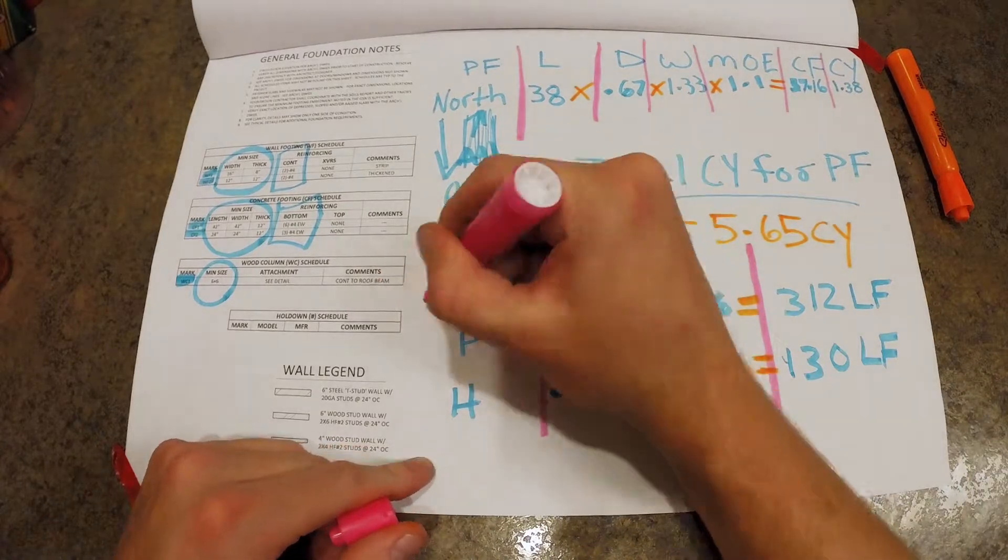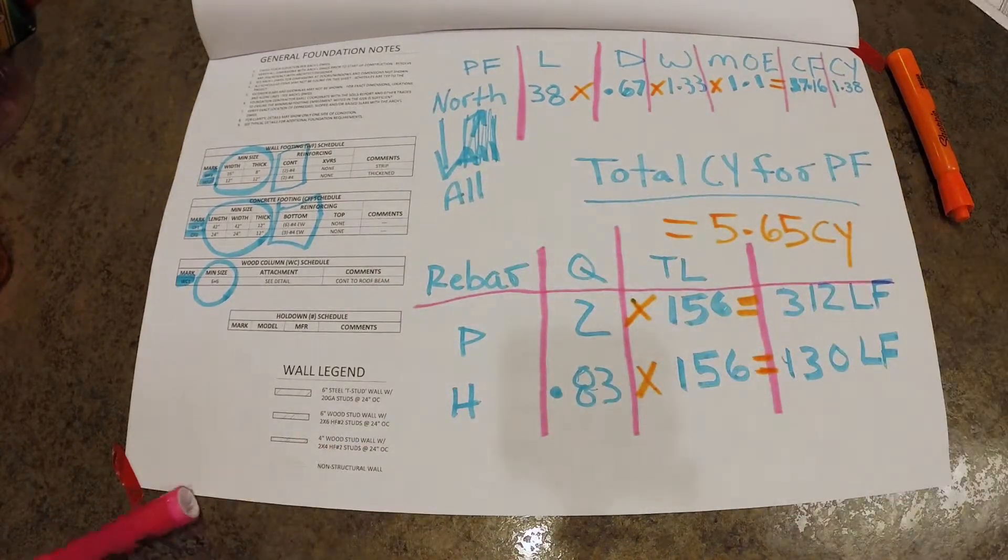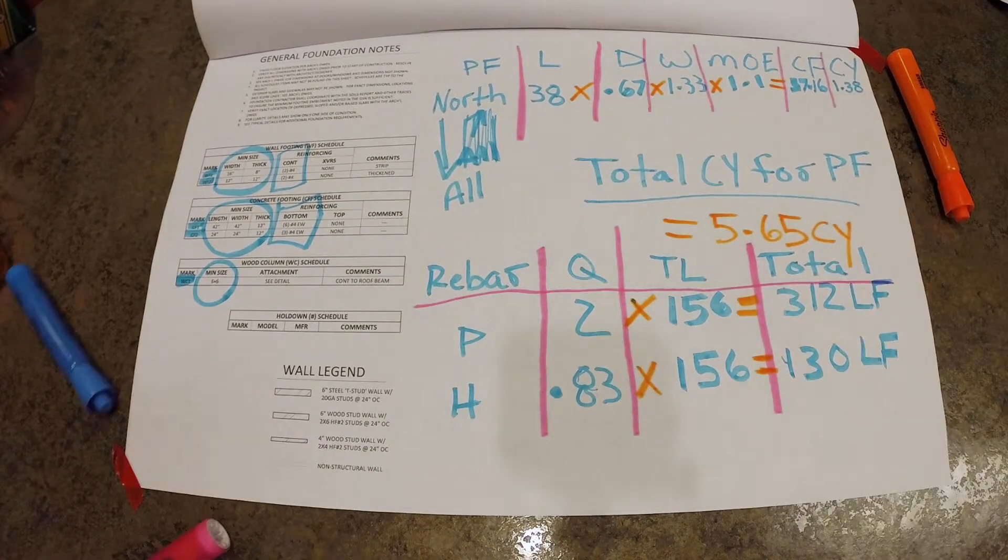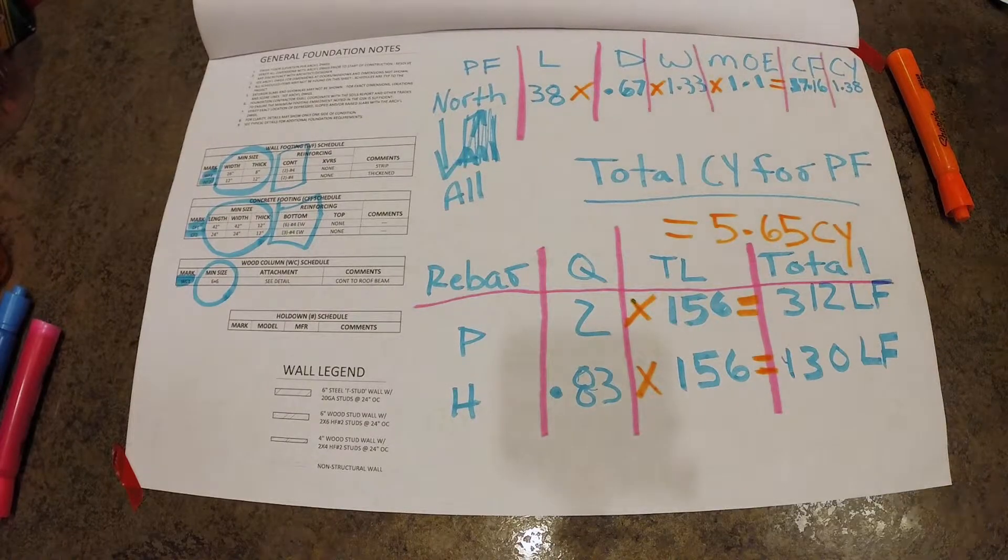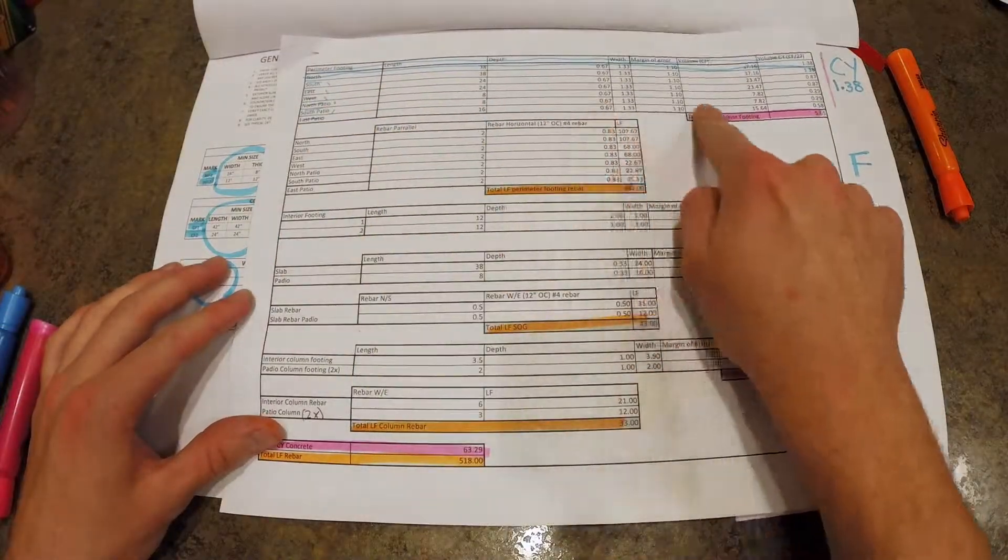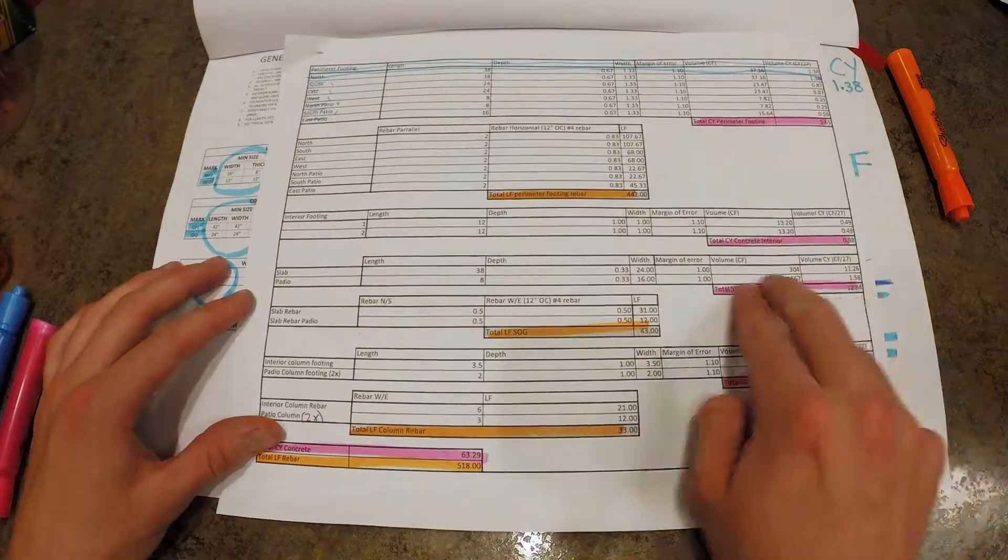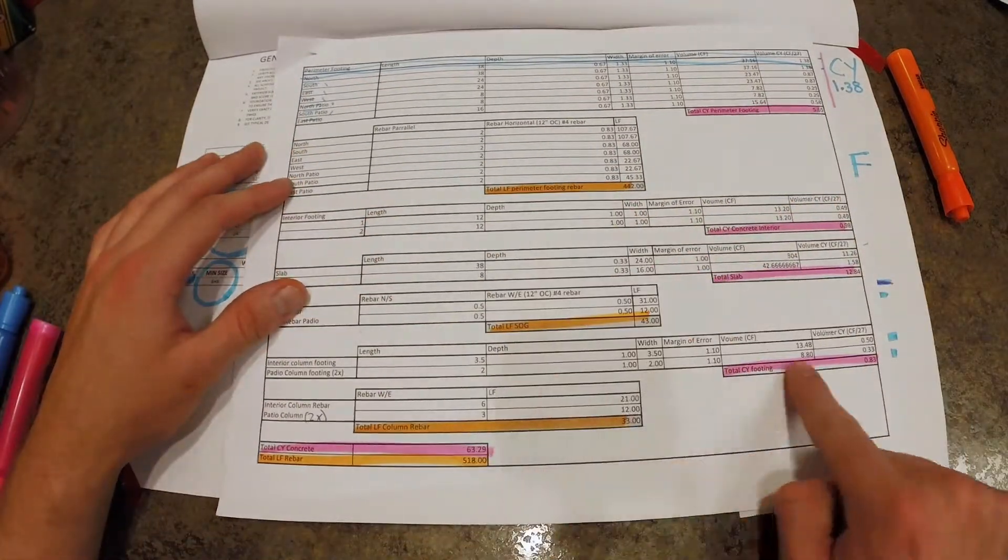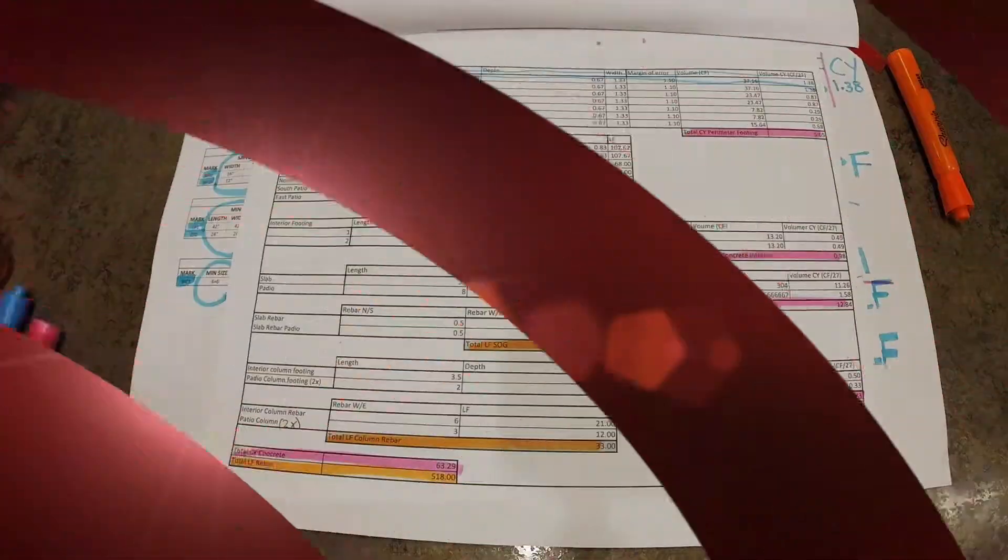Now you're going to go ahead and continue to do this for each detail, for each section of the slab. And you're going to put it into a spreadsheet. It's a little neater than this. So you go ahead and tally it all up. And then you can see at the very bottom you've got your totals 63.29 and such.